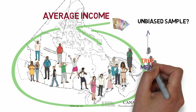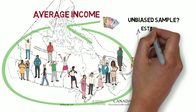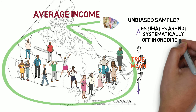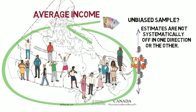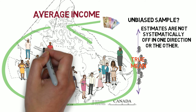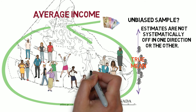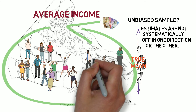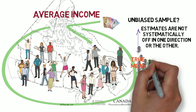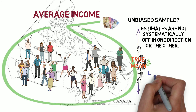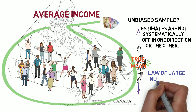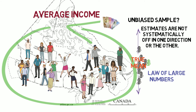If we drew many such samples and then took the average of the mean incomes for each of the two-person samples, that average would equal the mean income for the entire adult population. This, in fact, is the definition of an unbiased sample — one that delivers estimates that are not systematically off in one direction or the other. In most surveys, we sample many more than two people. The larger we make the sample size, the closer we expect the sample mean to be to the population mean. This is called the law of large numbers, and it is what underlies the size of the long-form census.